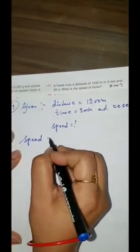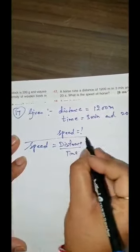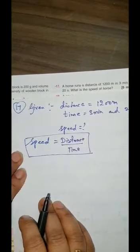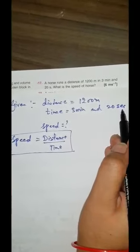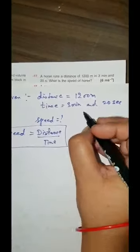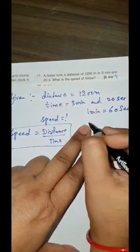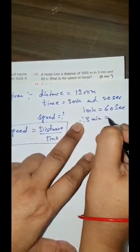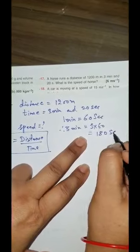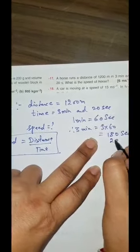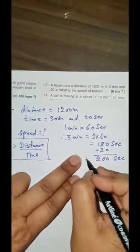We have done this formula: speed is equal to distance upon time. Now we have to put the value. Distance is given in meter, but time is given in minutes. We know 1 minute is equal to 60 seconds. Therefore 3 minutes is equal to 3 into 60, that is 180 seconds. And 20 seconds more is given, so you will add — it will come 200 seconds. So your time is 200 seconds.